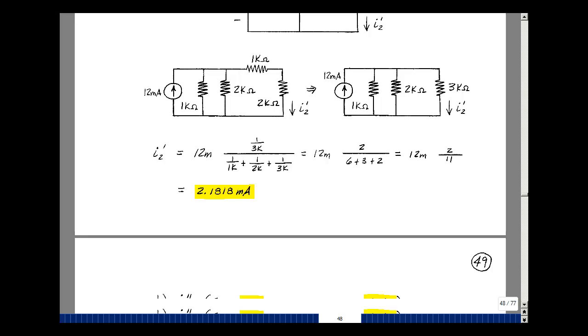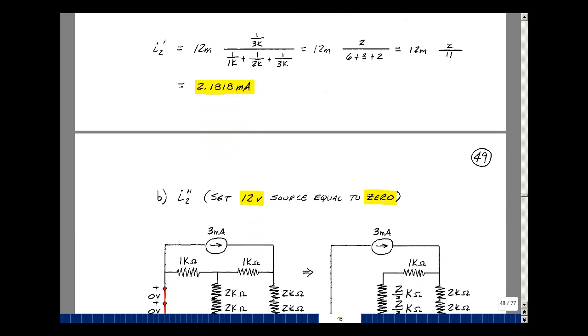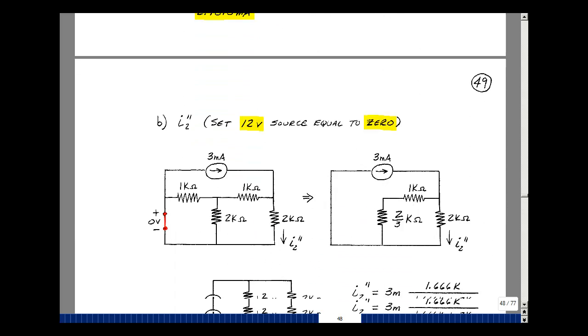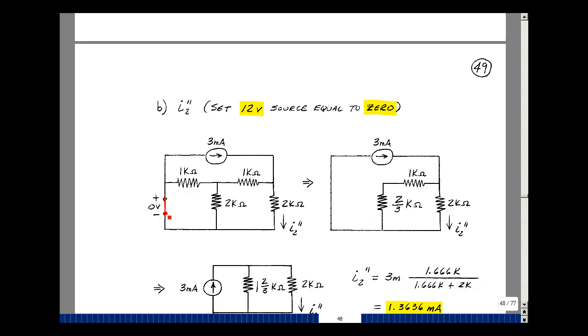Now let's set the other source equal to 0. So we're setting all the sources equal to 0 except 1. Setting this equal to 0 is a short circuit. Let me redraw this resistor. It's really now in parallel with this 2K resistor. So I really have a series combination of the 1K resistor and then the 1K in parallel with the 2K. Product over the sum would be 2K squared divided by 3K, so I get 2 thirds K.